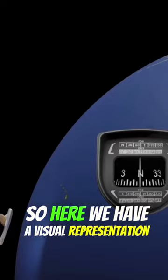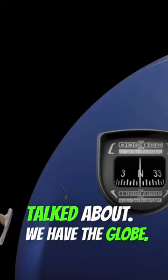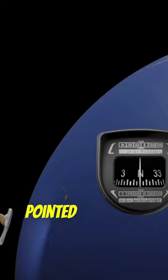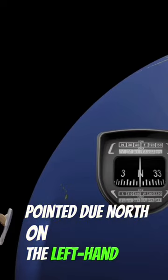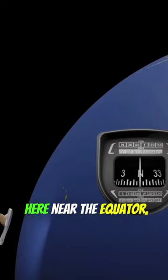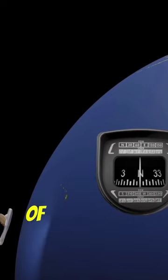So here we have a visual representation of what we just talked about. We have the globe, we have our aircraft pointed due north on the left-hand side here near the equator, and we have our compass reading of north.